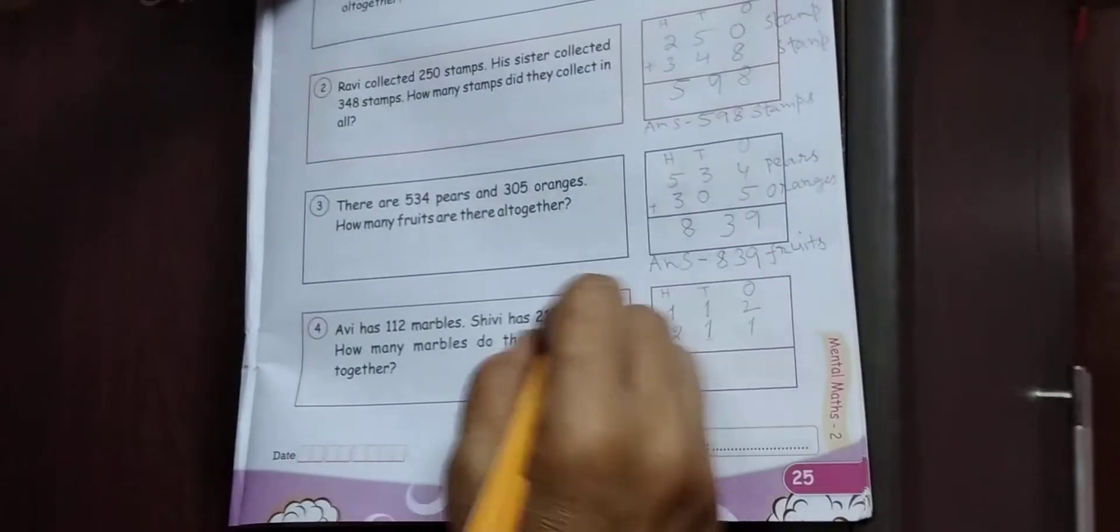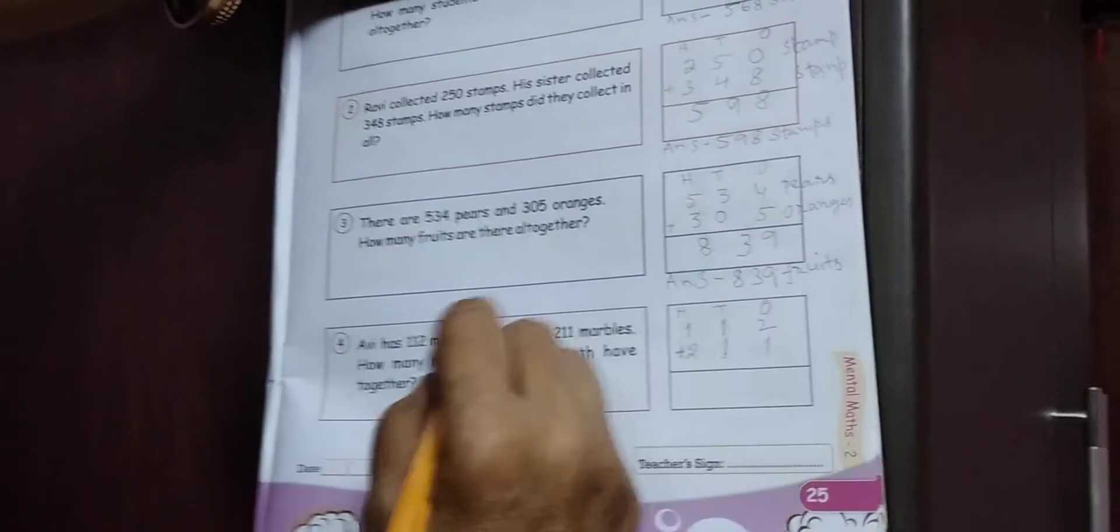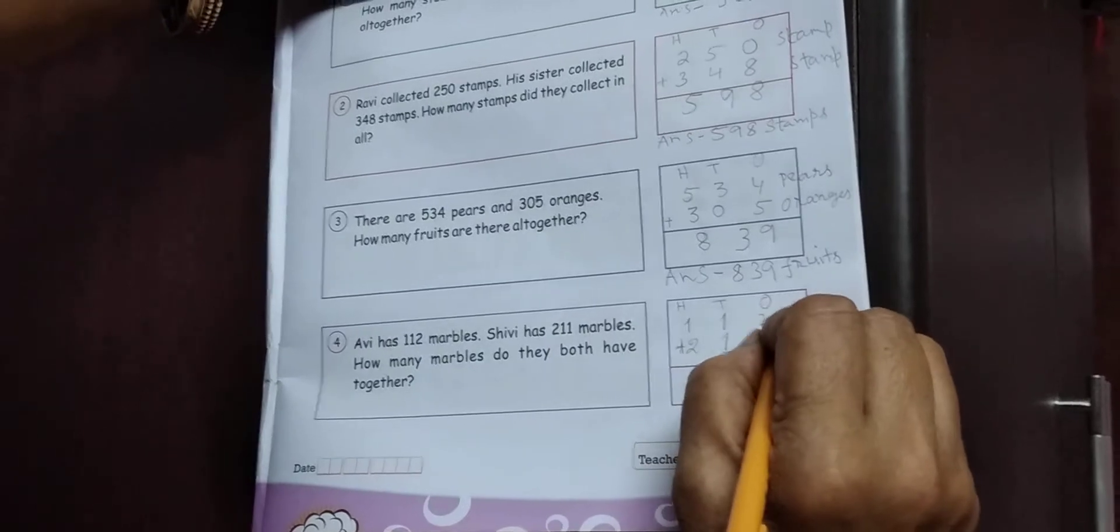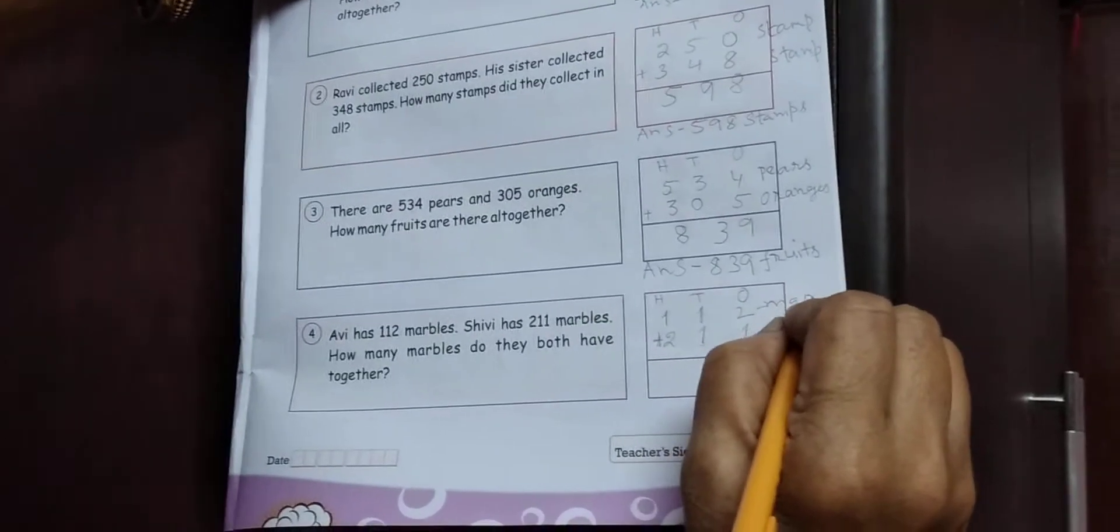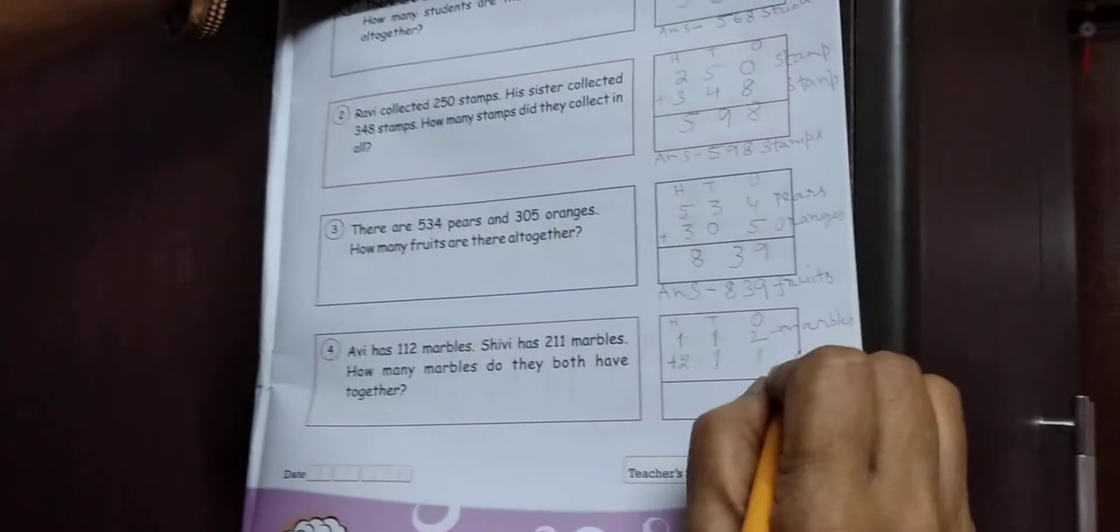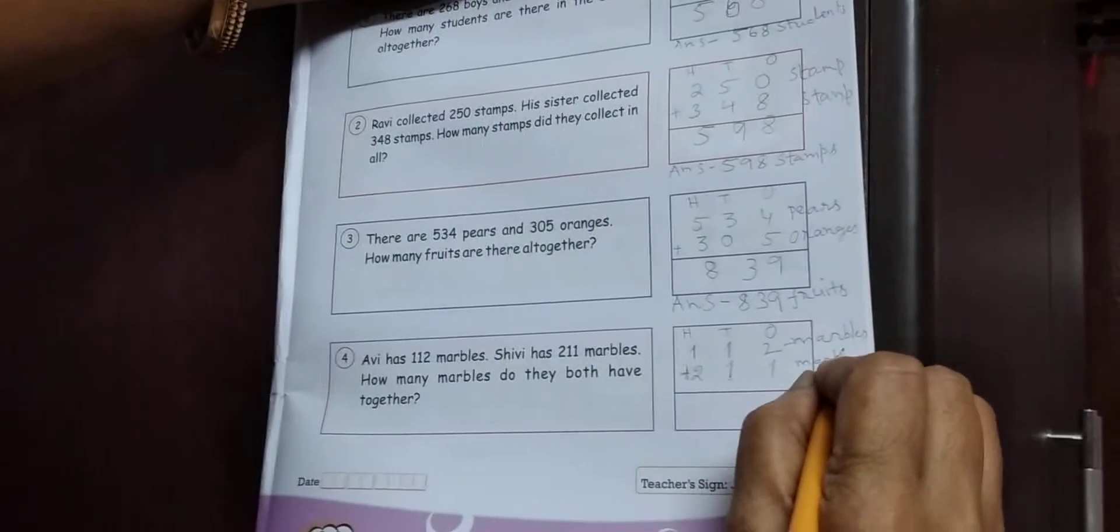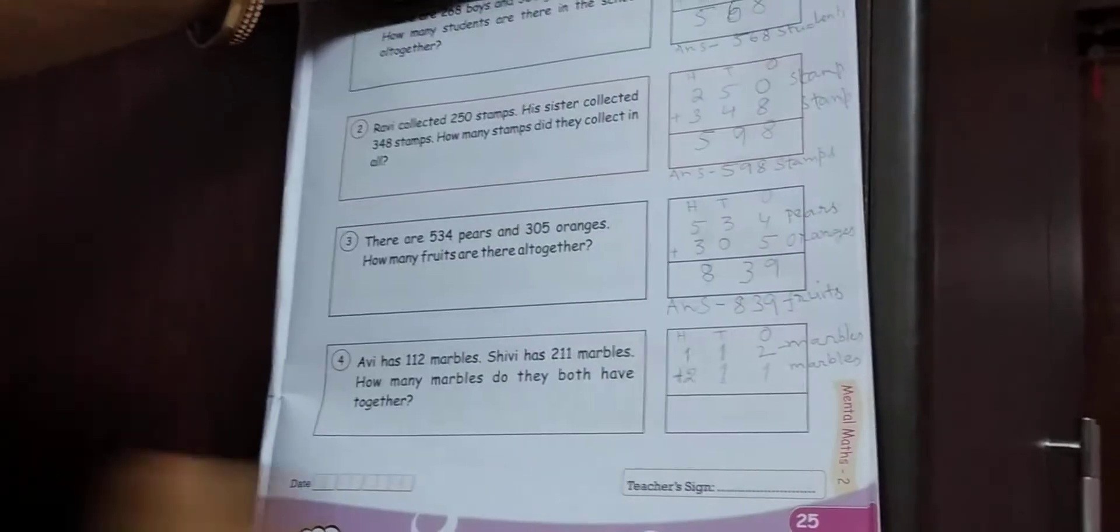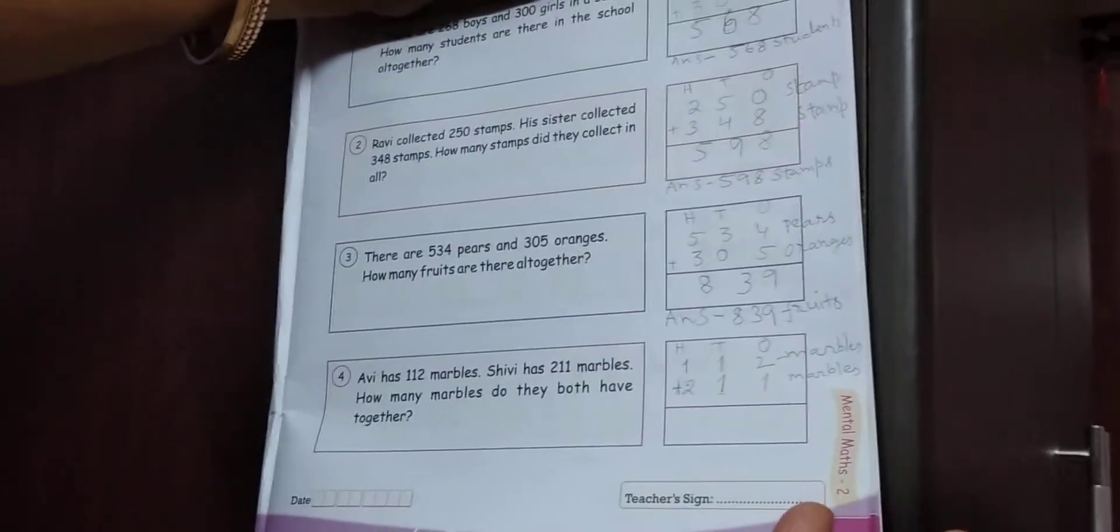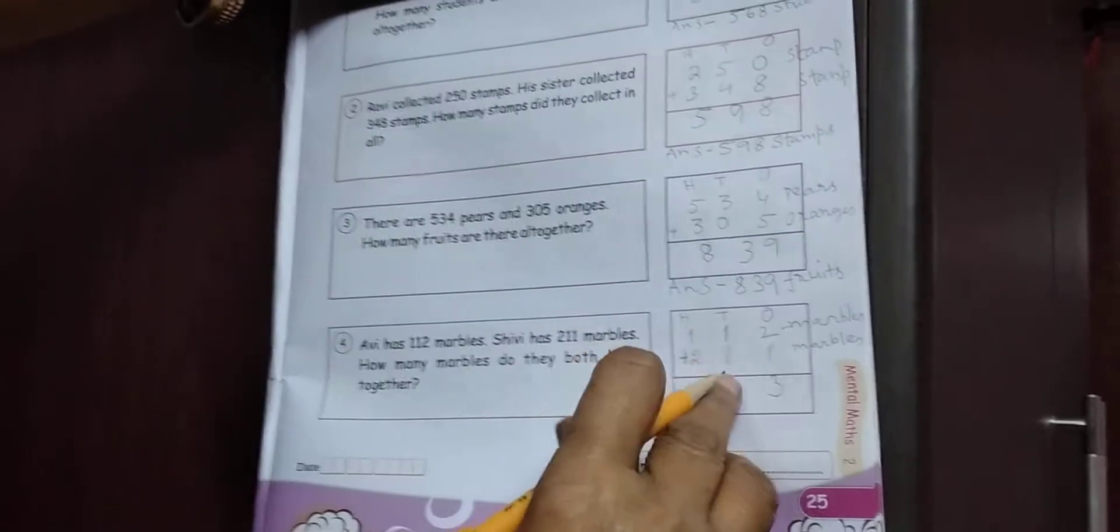Addition plus. 211, 1. 112, kya hai marbles? M, A, R, B, L, E, S. Marbles? Count on, 1 or 2 may, 2, 3. 3.